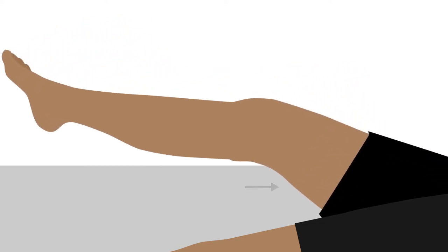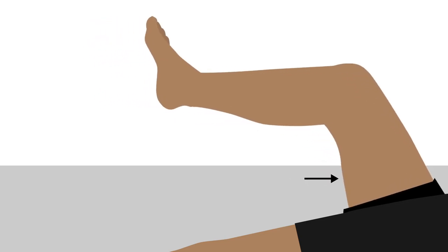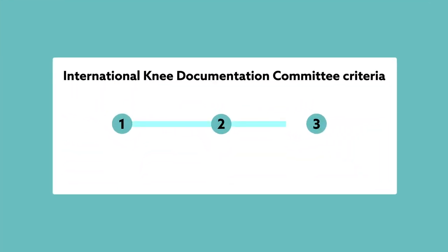The pivot shift test is the most specific physical exam for diagnosing ACL injuries. The examiner applies inward pressure on the lateral thigh with one hand, while internally rotating the lower leg as the knee is flexed from a fully extended position. The presence of a pivot shift is indicated by an abrupt forward shift of the tibia back to its normal anatomical position. This shift is graded between 1 and 3 according to International Knee Documentation Committee criteria, with 1 and 2 considered low-grade and 3 considered high-grade.